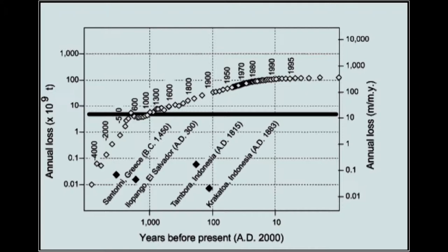Look at the graph in front of you and notice that on the y-axis is described annual loss of sediment and soil, either measured in tons or in meters per million years. On the x-axis, you can see time from the present on the right to 2,000 years before present on the left. The solid black line crossing the graph shows a long-term average natural erosion rate calculated through geologic time. The open diamonds show the cumulative effect of erosion by human processes.